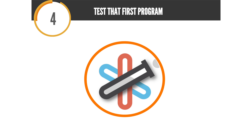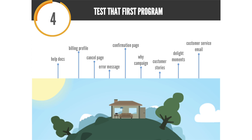Number four: testing that first program. Different starting points work for different business models. One example: your help docs. How many of us as marketers think about whether our help documentation is incredibly optimized, and what we could do with our CRO experience, design theory, and customer knowledge to make it more effective? If it's more effective, they love us more; if they love us more, they spend more. Something as simple as help documentation — usually written once and never revisited — is a great place to start.